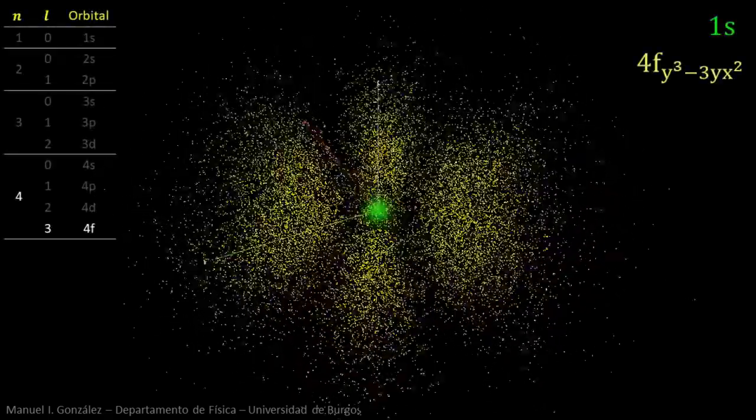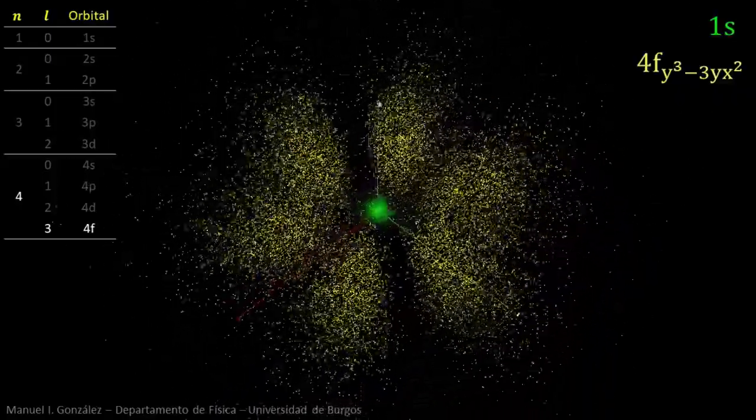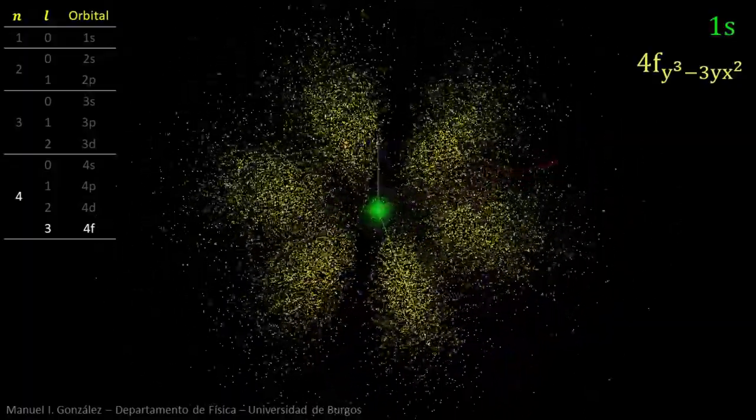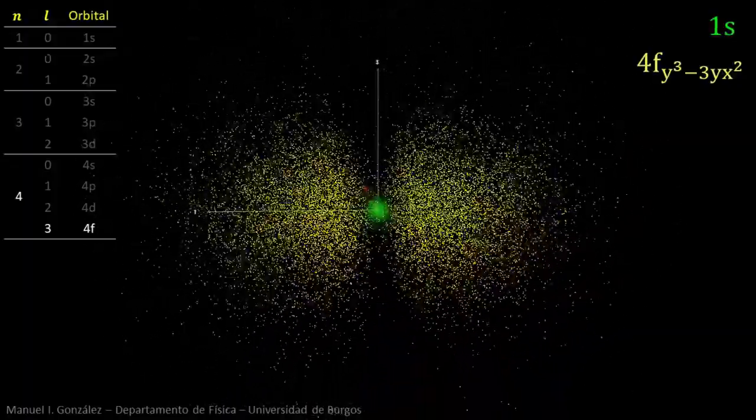As quantum numbers grow, the orbitals become increasingly complex in shape, with new lobes and nodes. For example, this is one of the seven 4f orbitals.